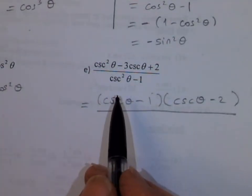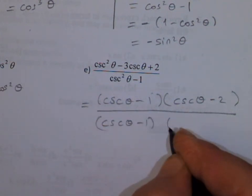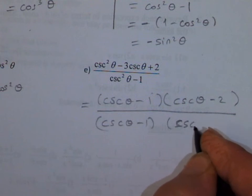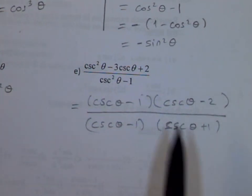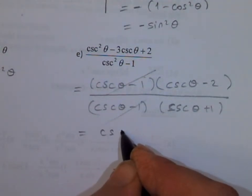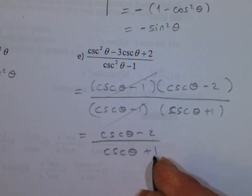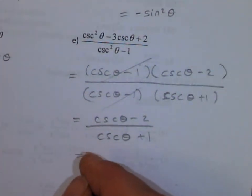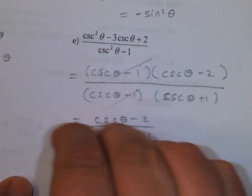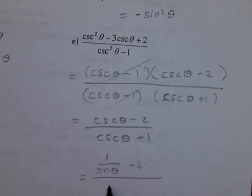The denominator is a difference of squares, giving cosecant theta minus 1 times cosecant theta plus 1. Now the common factors cancel, leaving cosecant theta minus 2 over cosecant theta plus 1. Now replace cosecant by 1 over sine theta: you get 1 over sine theta minus 2, all over 1 over sine theta plus 1.